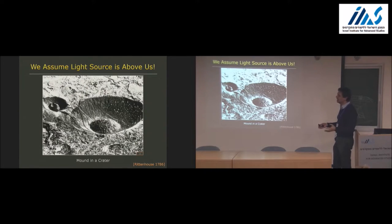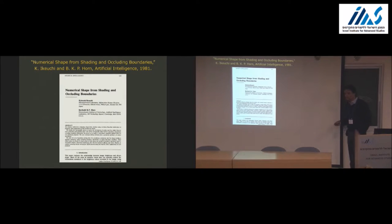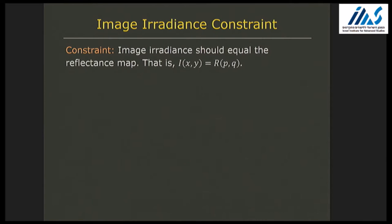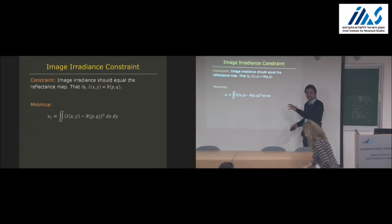You need to throw more at the problem to solve it. The first attempt at doing that - there were many shape from shading articles, but this one by Ikeuchi and Horn was the first practical attempt at this, which said let's use additional constraints. The kinds of constraints shown to be used in psychophysics as well. The first constraint is that the image intensity value must equal to the reflectance map value. This is not even an assumption, it's just a constraint.